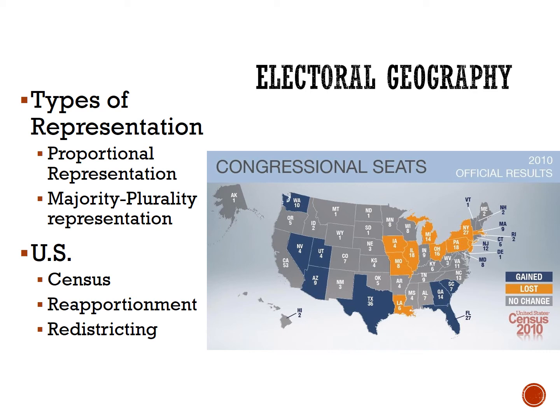The United States has a two-house legislative branch at the national level consisting of the Senate and the House of Representatives. In the Senate, every state gets two senators regardless of their size. But the House of Representatives is based on population, so bigger states have more representatives. In 1912, the number of representatives was capped at 435 and has stayed there ever since. These representatives are elected to districts with similar-sized populations. Some states — like Wyoming, Montana, and Alaska — are so small in population that they only have one representative covering the entire state; these are called at-large districts.